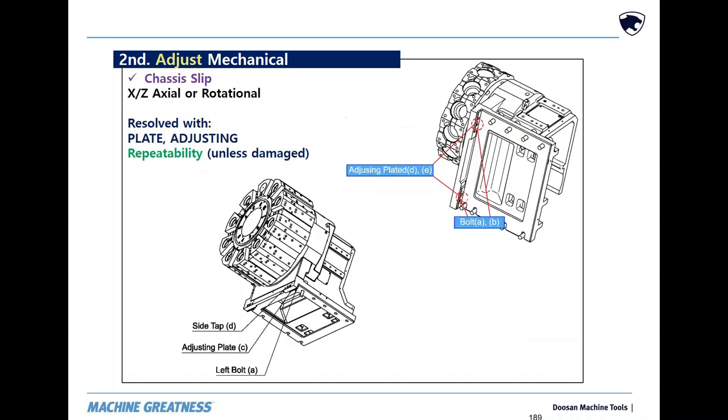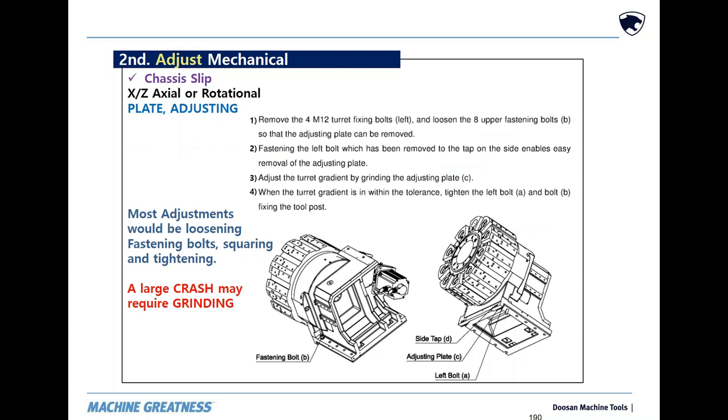We have two methods for correcting chassis slip. First method is adjusting plates that give quick repeatability, unless the crash is so bad that they are damaged. When using a plate, adjusting a light crash is corrected as easily as loosen, smack it, and tighten it down.